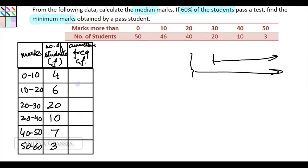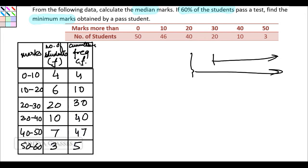Now let us find cumulative frequency since we need to find the median. Starting from class 0-10: CF = 4. Then 4 plus 6 = 10. Then 10 plus 20 = 30. Then 30 plus 10 = 40. Then 40 plus 7 = 47. Then 47 plus 3 = 50. So our cumulative frequencies are 4, 10, 30, 40, 47, and 50.